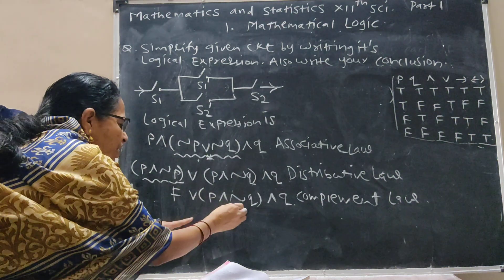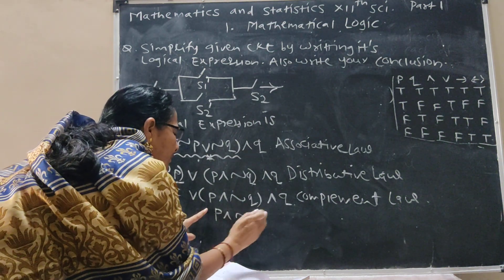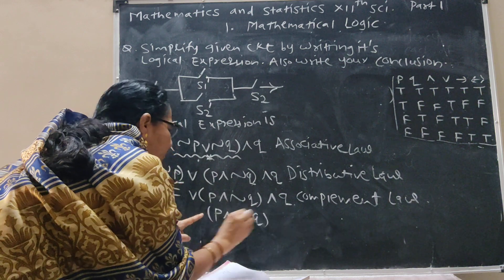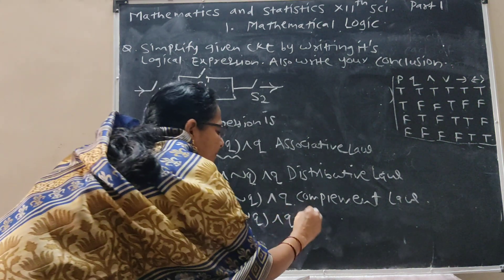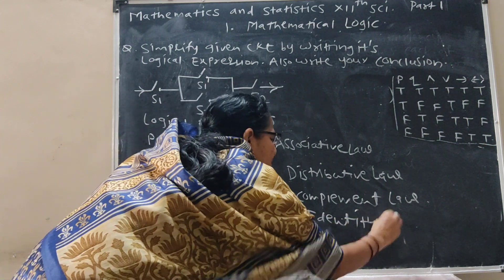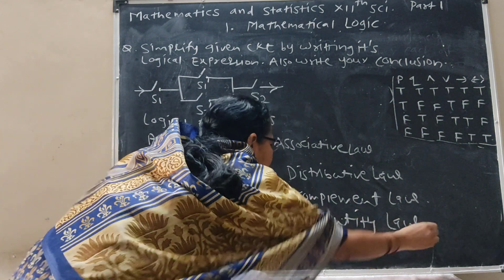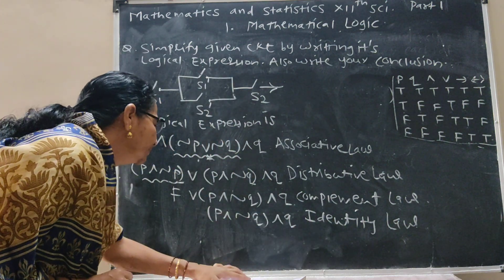Now F or this term is this term. This is identity law. P and negation Q and Q.